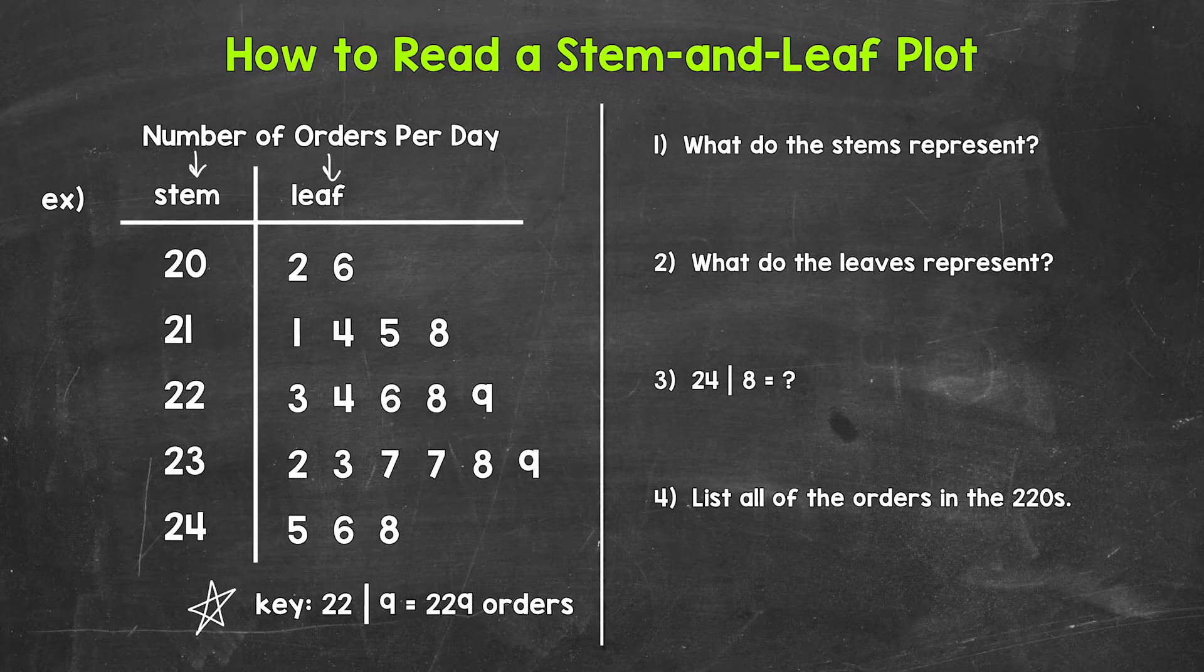This key tells us that a stem of 22 and a leaf of 9 equals 229. And since we are working with orders per day, we have a label of orders. That tells us that the stems represent the hundreds and tens place and then the leaves represent the ones place.